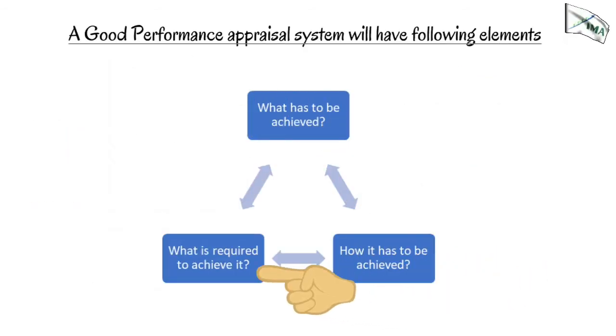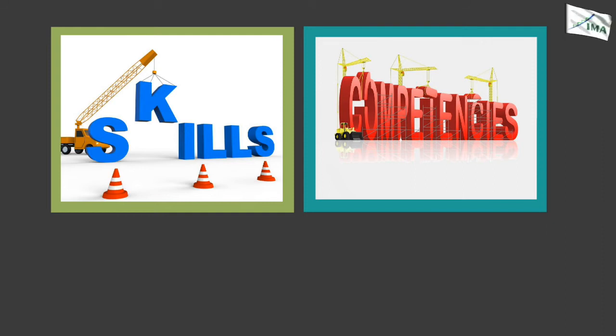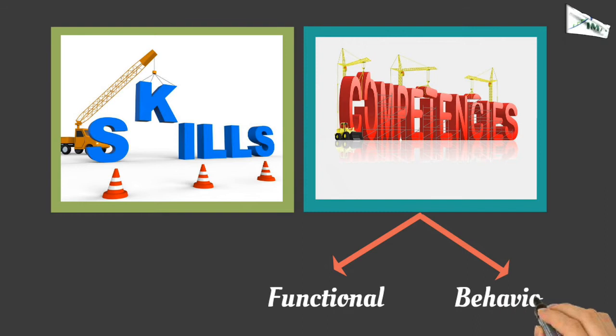What is required to achieve it: What skills and competencies are required for employees to achieve these targets. Functional and behavioral competencies are identified that the employees need to learn. There should be a good system of developing these competencies in the company.